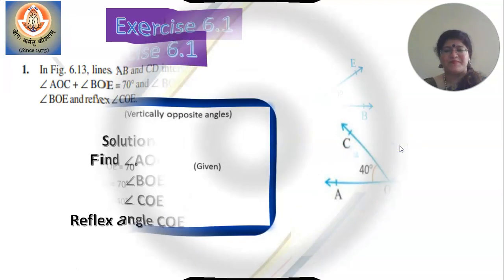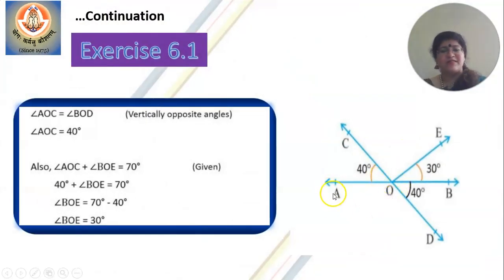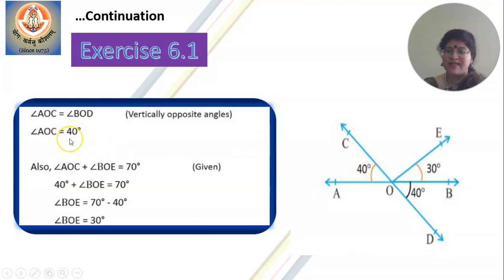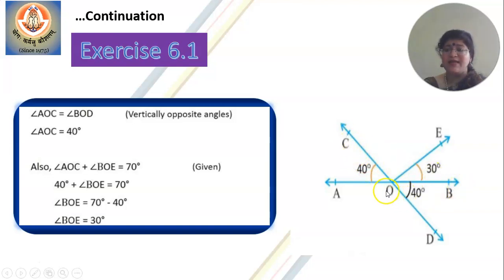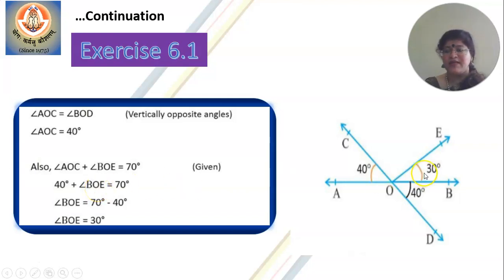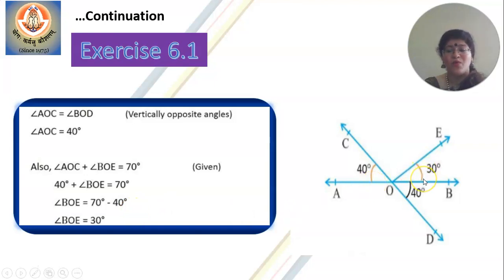I have solved it — have a look. Angle BOD equals angle AOC because they are vertically opposite angles, so you get the answer as 40 degrees. You have to write down the reason that they are vertically opposite angles. Now, angle AOC plus angle BOE is 70 degrees — it is given to you. AOC is already 40, so BOE is 30 degrees. You have got angle BOE as 30 and angle AOC as 40 degrees.